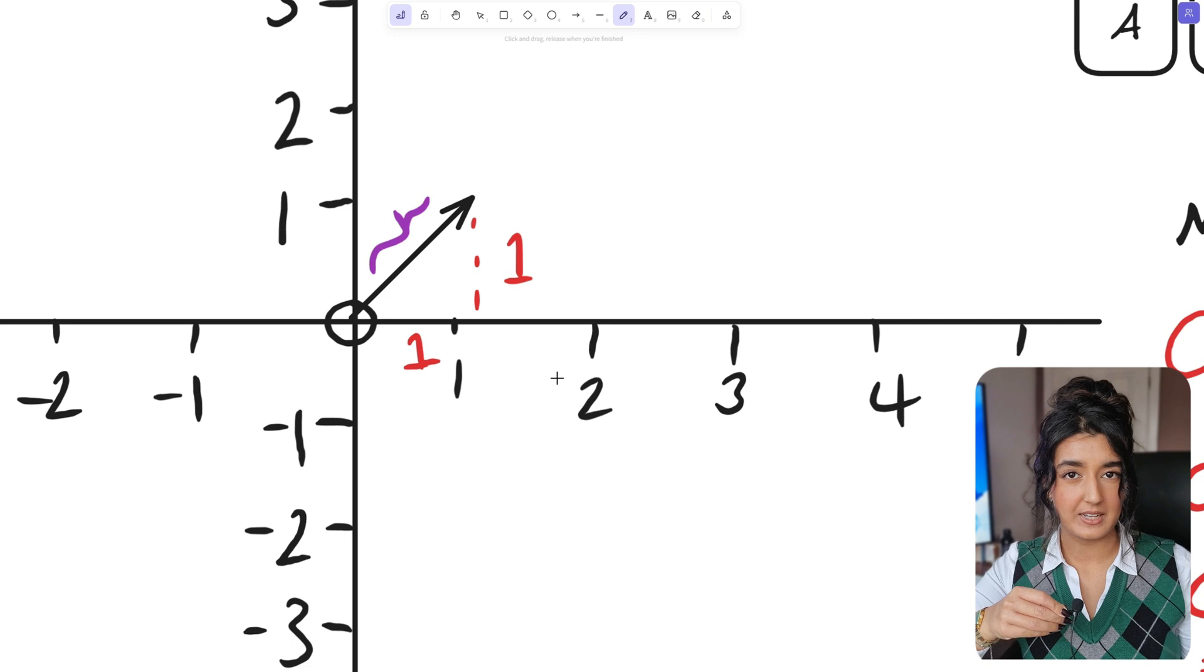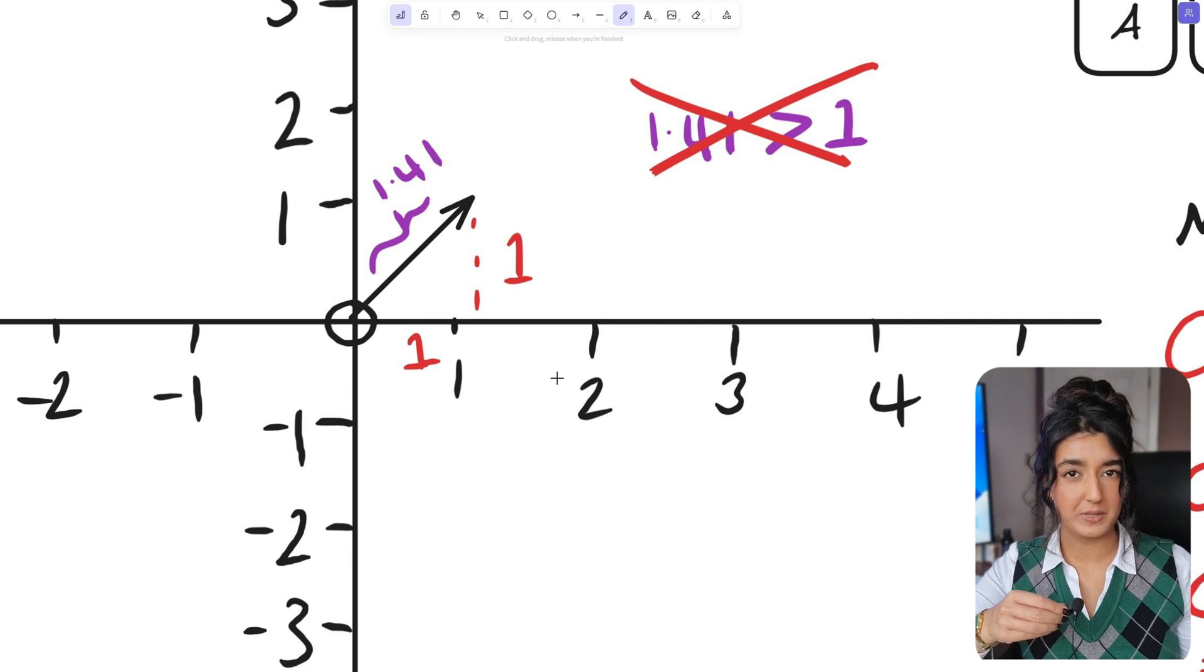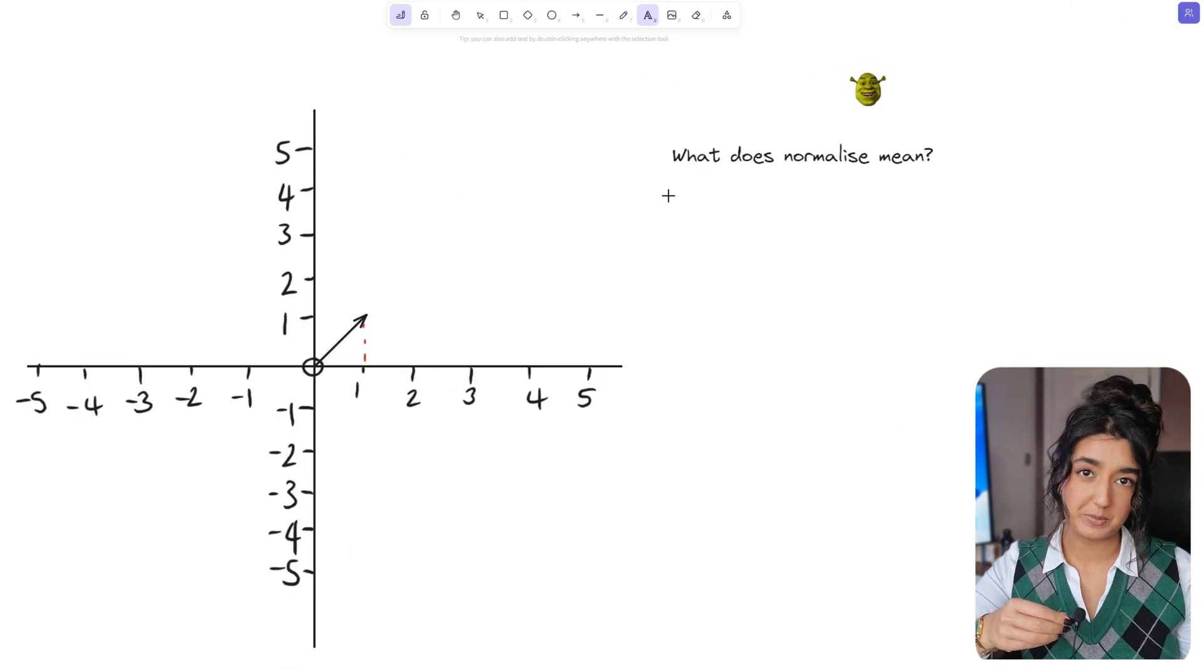Which means diagonally our player would move further than if they were only to move up or right. But we don't want this. We want our player to move with a magnitude of 1 whether it's diagonal or not. This is where normalization comes into play.